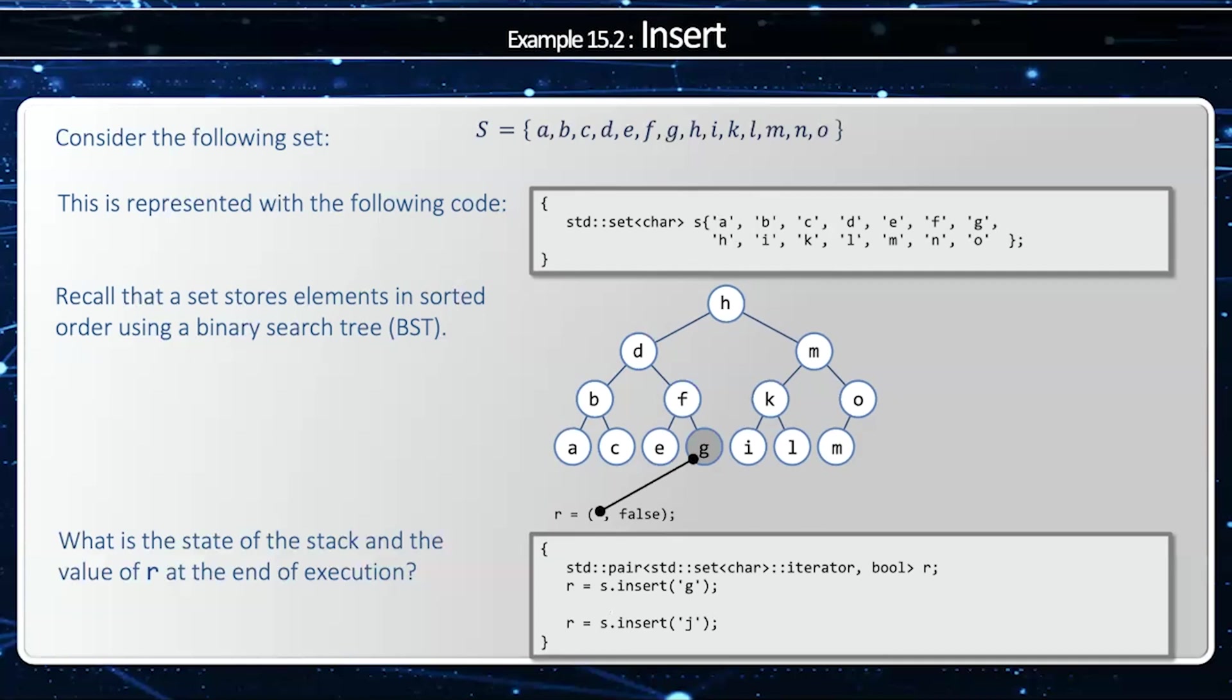Then if I say s.insert(j), I'm going to start at the 'h', and then less than 'm', less than 'k', greater than 'i', but there is no 'j', so it's going to be inserted in this place in the binary search tree. So I'm going to get an iterator to that new element and true to indicate a new element was added.